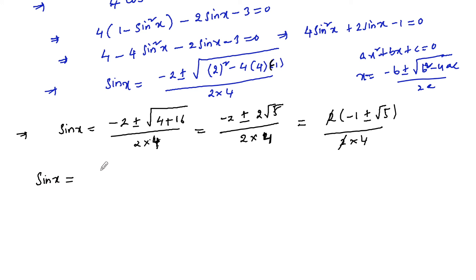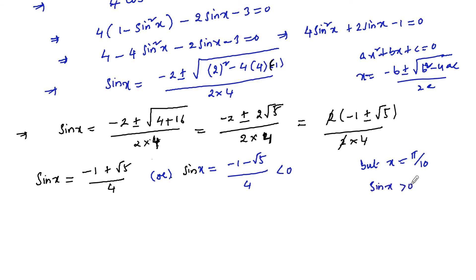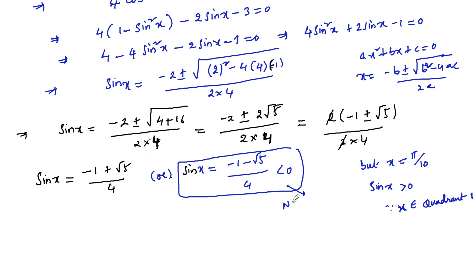So sin x = (-1 + √5)/4 or sin x = (-1 - √5)/4. The second value is negative. But x = π/10 is in the first quadrant, where sin x must be positive. So the negative value is not possible and is rejected.